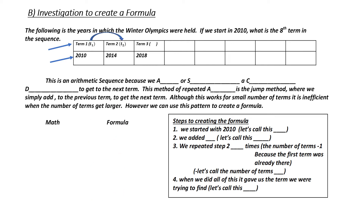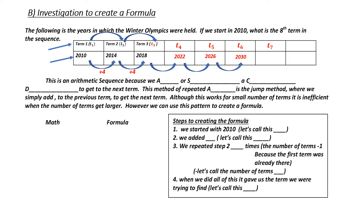Our second term, or T to the 2, we would add a common difference — in this case, 4. To get to our third term, or T to the 3, we would add 4 again, giving us 2018. T to the 4 would be 2022. T to the 5: 2026. T to the 6: 2030. T to the 7: 2034. And T to the 8 is 2038.